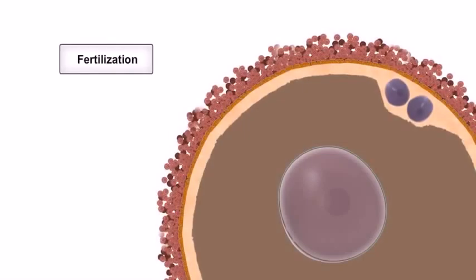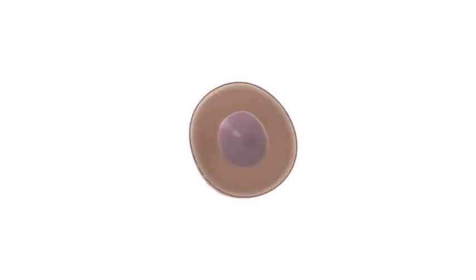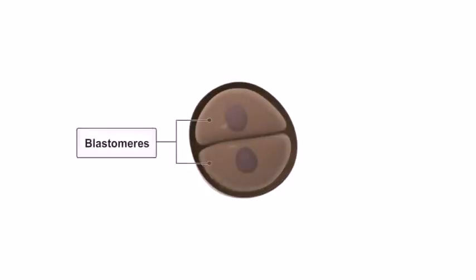After fertilization, the zygote undergoes rapid mitotic division known as cleavage. The first cleavage, completed about 30 hours after fertilization, produces two identical cells called blastomeres.